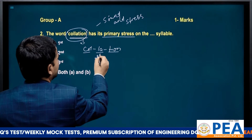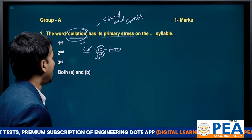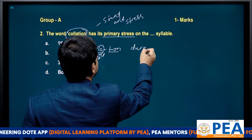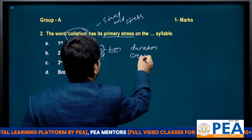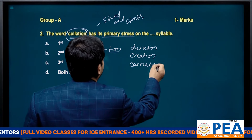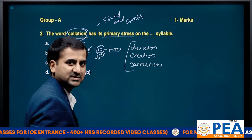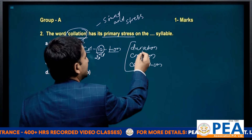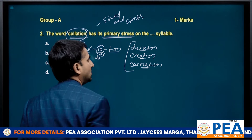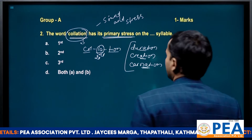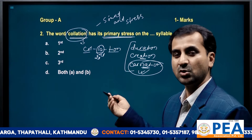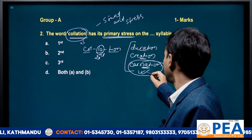Its primary stress is on the second syllable — 'li' gets the stress. On the basis of the same pattern, we have certain other words like 'duration', 'creation', and 'carnation'. They are all trisyllabic words and they all have their primary stress on the second syllable. You will have to comment below the meaning of 'carnation' since you have studied 'incarnation' — now you need to know 'carnation'.